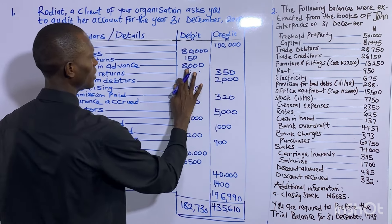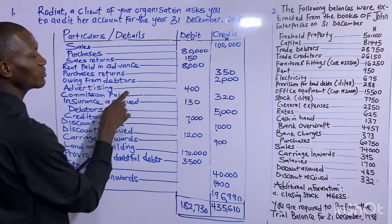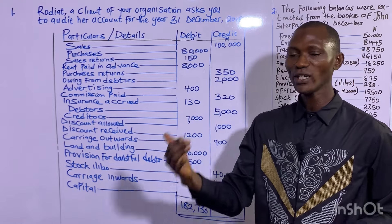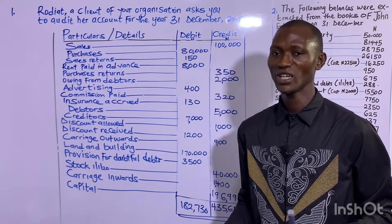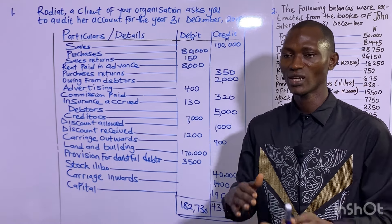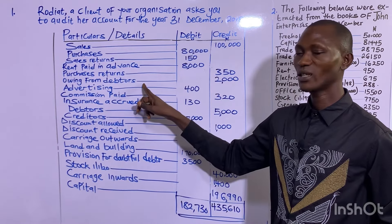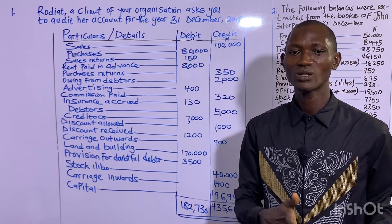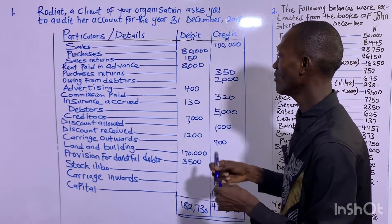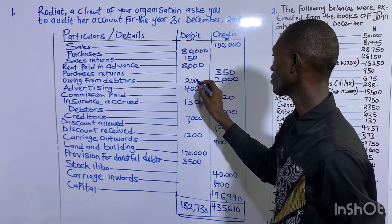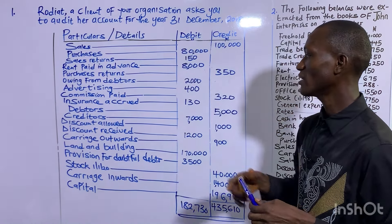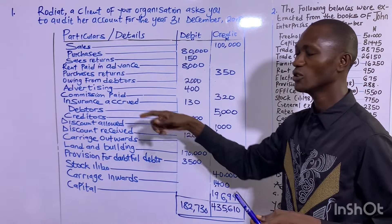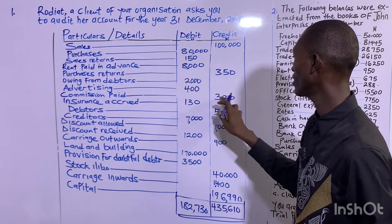Owing from debtors is an asset — when you eventually collect that money, it increases your cash, which is a component of current assets, and all assets are debited. It was credited and should be debited. Advertising is an expense and all expenses are debited — this is intact. Commission paid is an expense and all expenses are debited, but it was credited here, so we debit it.